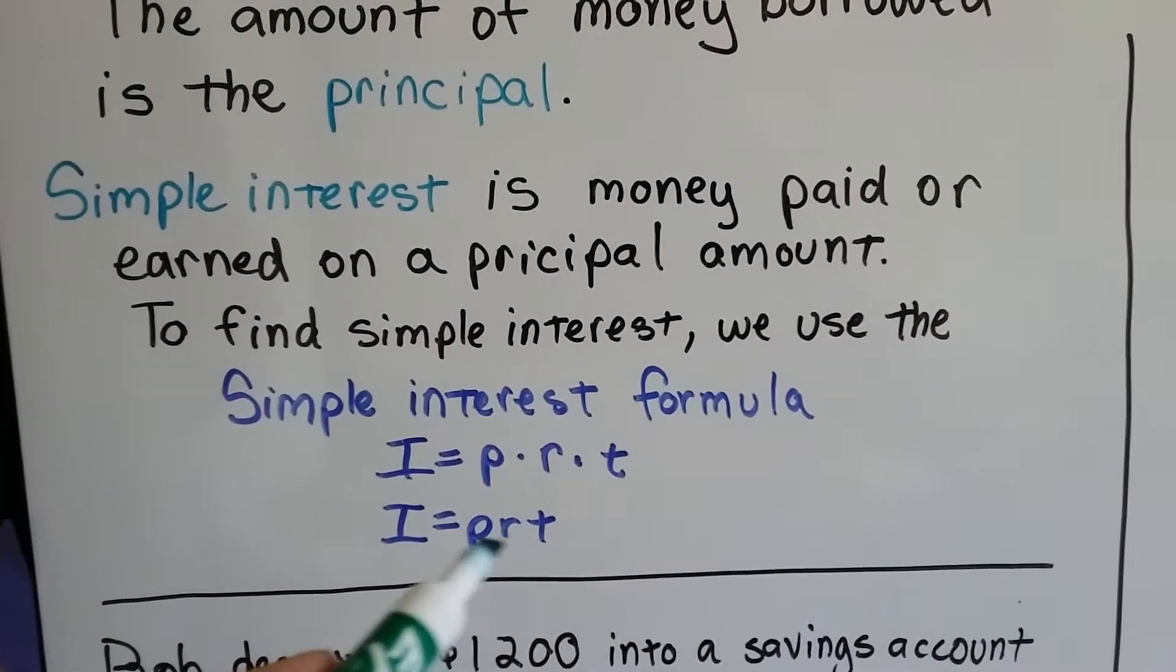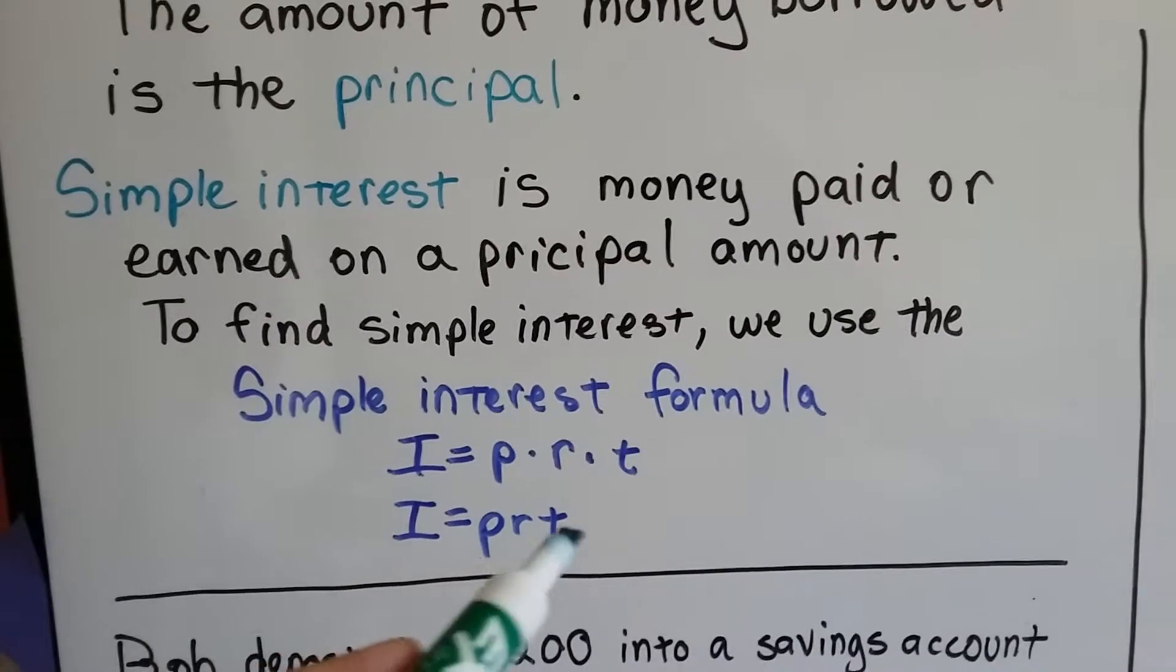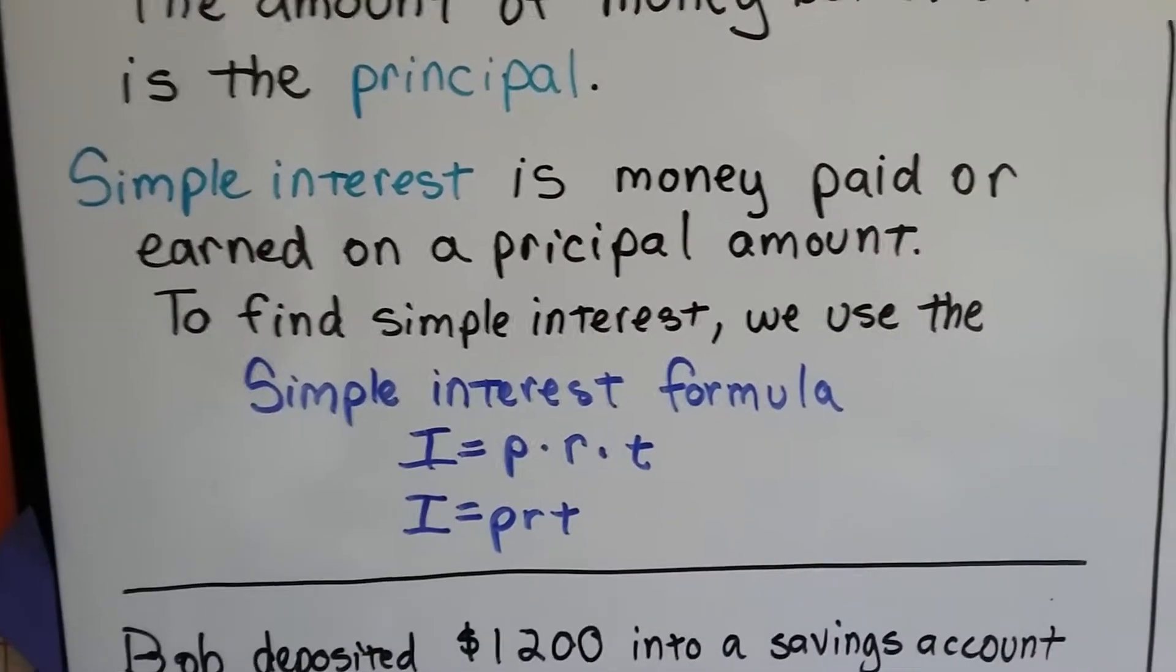And when you see the variables next to each other, you know that means to multiply them, right?